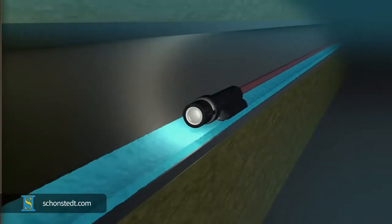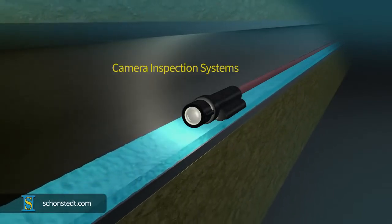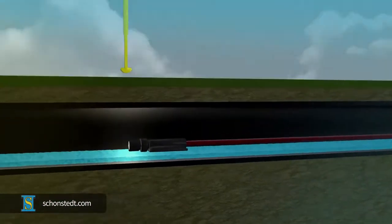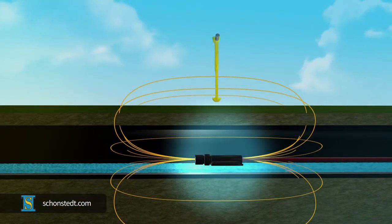Sondes are often built into camera inspection systems for sewer pipes, water pipes, and other underground structures. Therefore, these inspection cameras can also be located with the same technique and instruments used to locate a sonde, as long as the frequency emitted by the cameras is the same frequency at which the receiver is operating.